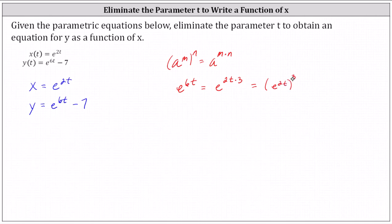And remember, e to the power of 2t is equal to x. So let's write the equation for y as y equals the cube of e to the power of 2t minus 7. And because x equals e to the power of 2t,